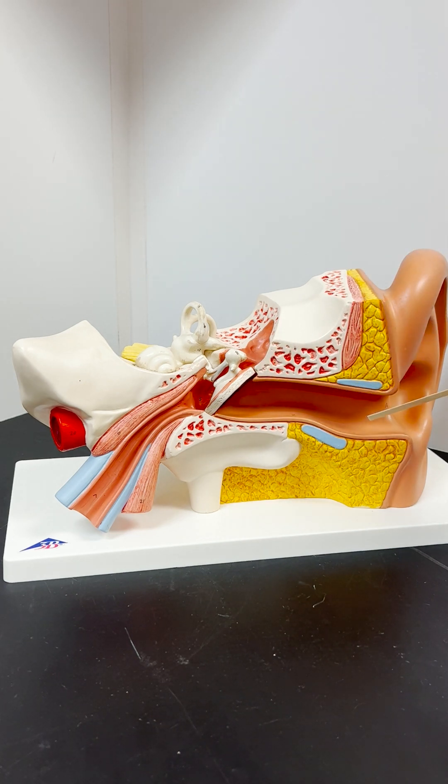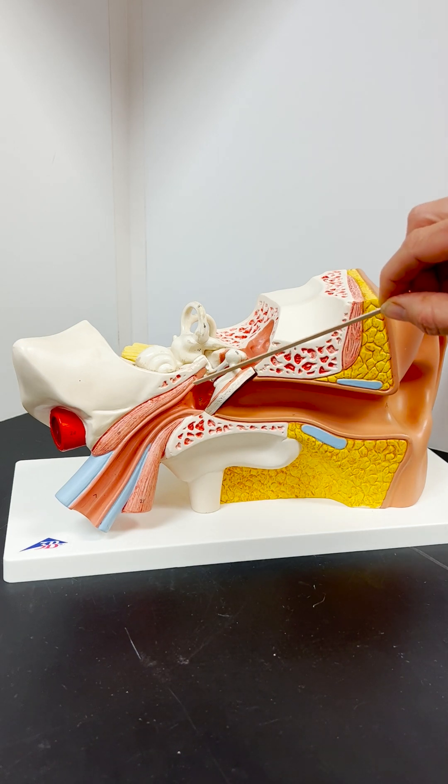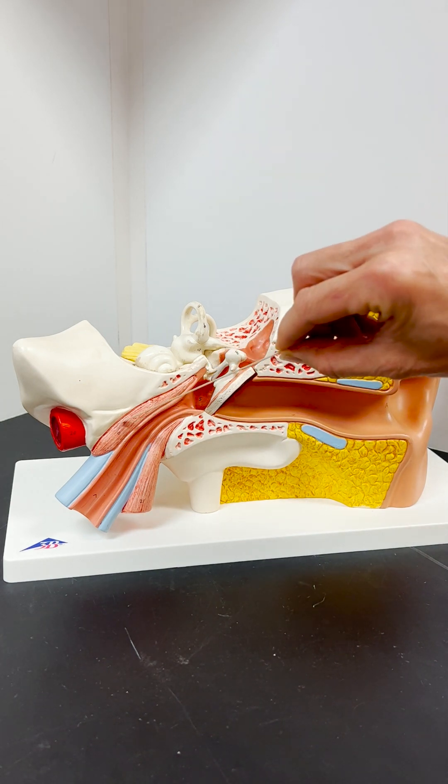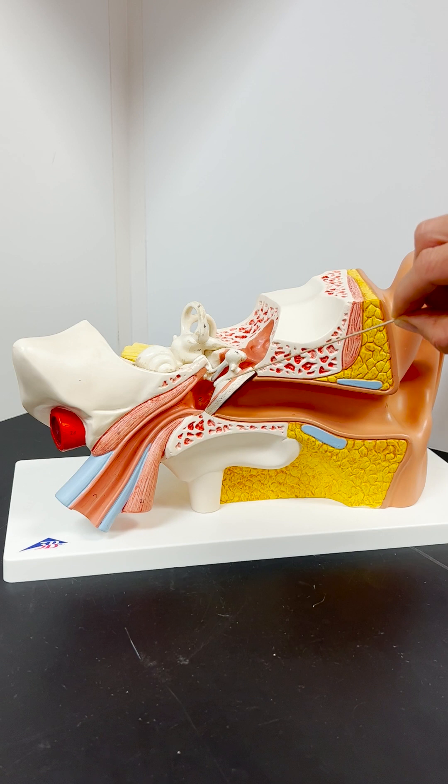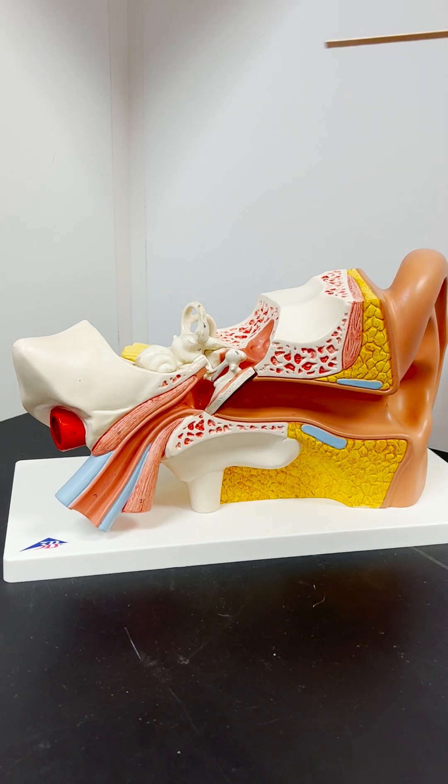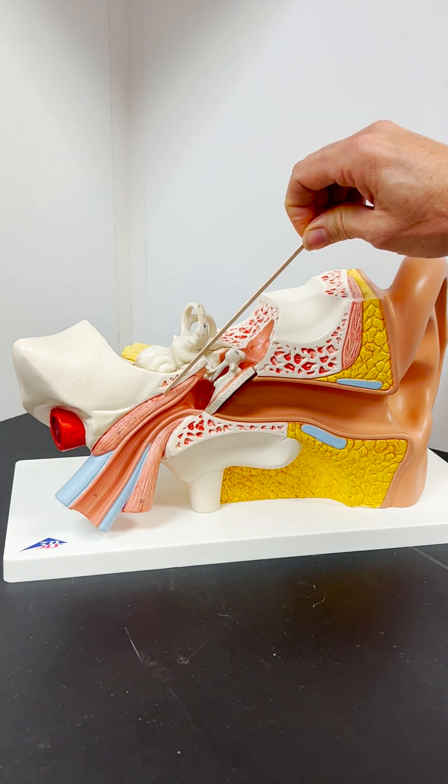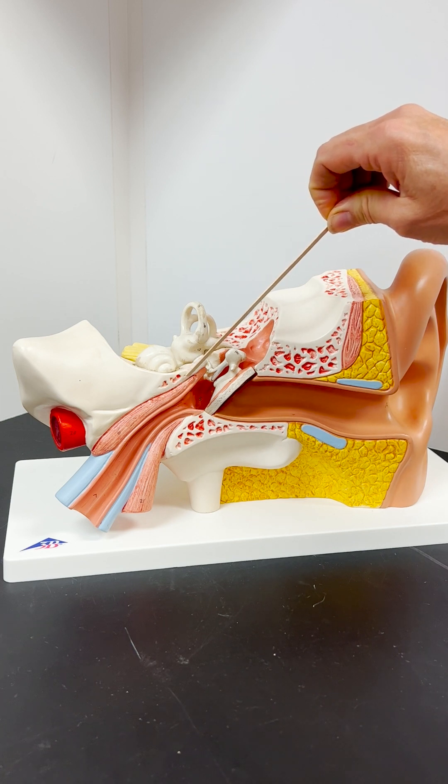When sound waves come into the auditory canal and the sound is loud with fast, strong vibrations, the tensor tympani muscle helps to subdue and control the tympanic membrane in a reflexive reaction.